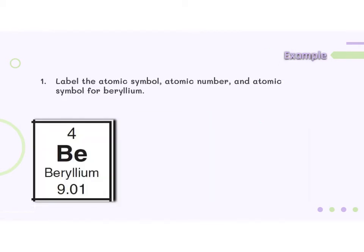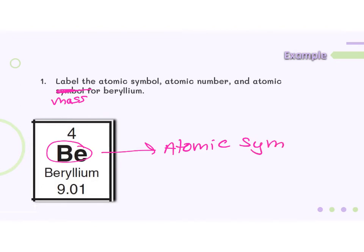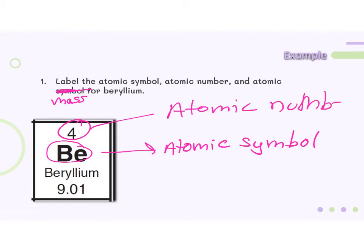In this example, it says to label the atomic symbol, atomic number, and atomic mass for beryllium. The atomic symbol is a two-letter symbol where the first letter is capitalized and the second letter is not. The atomic number is always the smaller one, and the atomic mass is the larger number.